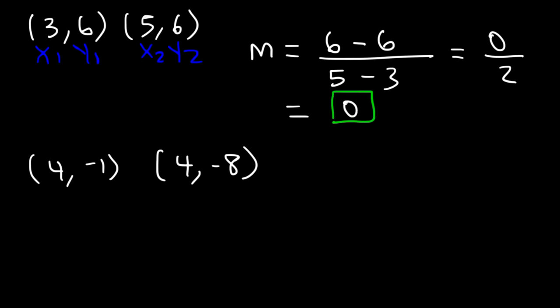Whenever the slope is 0, that means you have a horizontal line. The horizontal line could be y equals 2, y equals negative 1 — it doesn't really matter, but it's a horizontal line. The slope for any horizontal line is always 0.